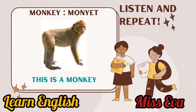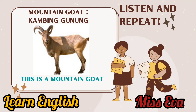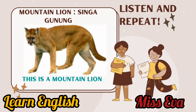Monkey. This is a monkey. Yes, this is a monkey. Repeat. Mountain goat. This is a mountain goat. Now you repeat. Mountain lion. This is a mountain lion.